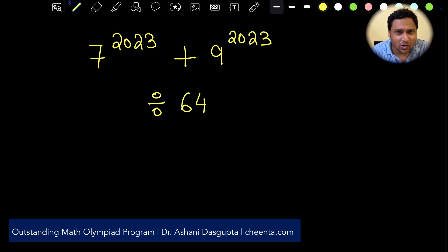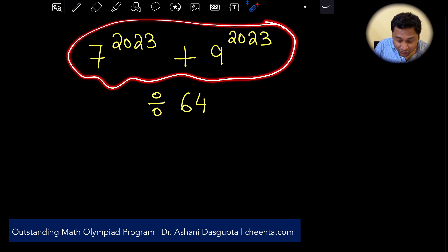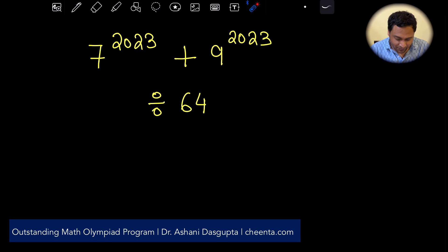This is a very important concept actually. How do you divide a very large number like this one? 7 to the power 2023 plus 9 to the power 2023. So how do you divide a number this large by let's say 64 in this particular case and find the remainder?